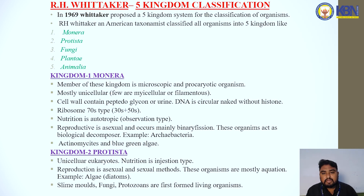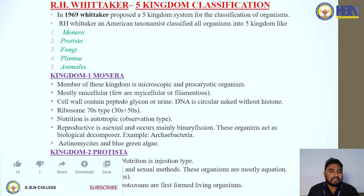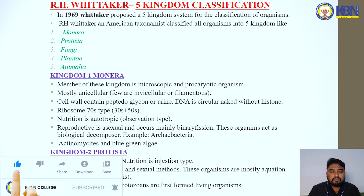The next topic is Whittaker's five-kingdom classification. In 1969, Whittaker proposed a five-kingdom system of classification of organisms. As an American taxonomist, he classified all organisms into five kingdoms: Monera, Protista, Fungi, Plantae, and Animalia.